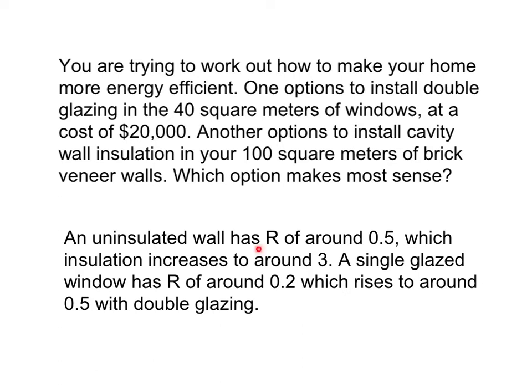Now we know that an insulated wall has an R-value of about half, which goes up to three if you put cavity insulation in. A single-glaze window has R of about 0.2, which goes up to about 0.5 with double glazing. So that depends a bit on exactly what sort of double glazing you get, and how expensive it is. Okay, so let's see what we can do.